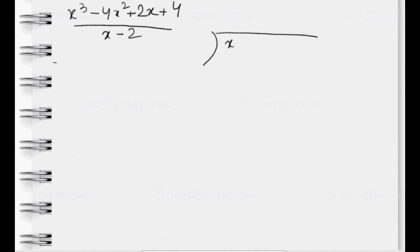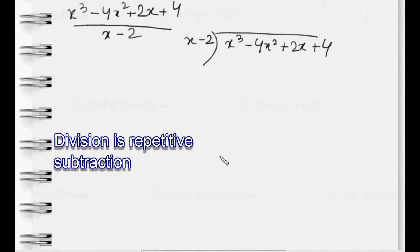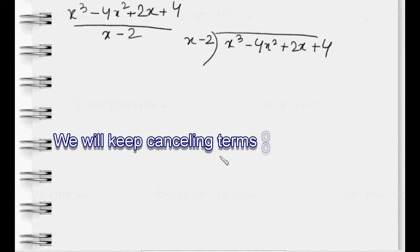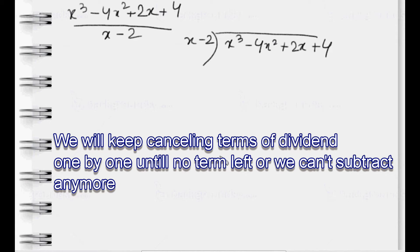We write the dividend here: x³ - 4x² + 2x + 4 and divisor here. Division is repetitive subtraction. When we divide, we actually keep subtracting until there is nothing left or we can't subtract anymore. We will keep subtracting and cancelling out terms of the dividend until there is no term left or we can't subtract anymore.